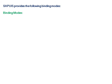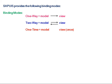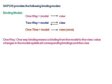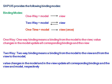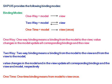SAPUI5 provides the following binding modes. One-way: from model to view. Two-way: from model to view and view to model. One-time: only once from model to view. One-way binding means a binding from the model to the view; value changes in the model update all corresponding bindings and the view. Two-way binding means a binding from the model to the view and from the view to the model; value changes in the model and in the view update all corresponding bindings and the view and model respectively. One-time binding means from model to view only once.